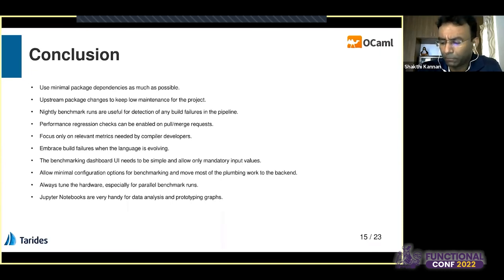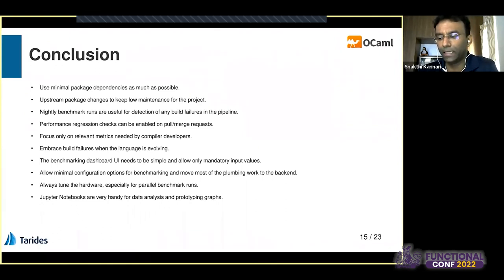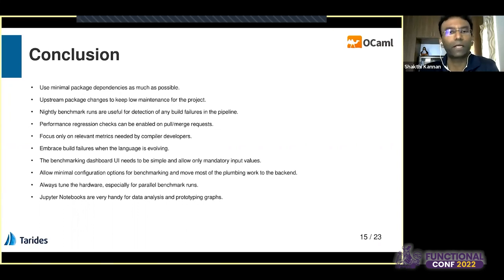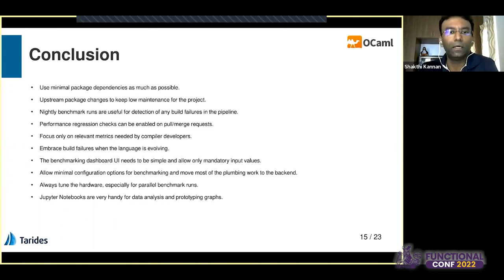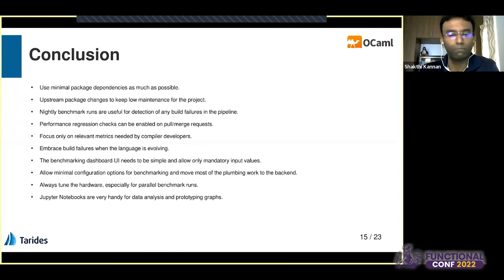The key takeaways: when doing benchmarking, try to keep minimal package dependencies as much as possible. If you have patches built for specific OCaml or compiler variants, push those changes upstream so the respective package maintainers can manage that for you. Nightly runs are very useful — we were able to detect regressions in most PRs. And it's important to work closely with compiler developers to understand what metrics they really need and focus only on those, rather than creating a large plethora of irrelevant metrics.